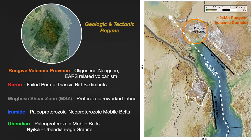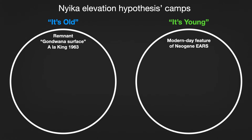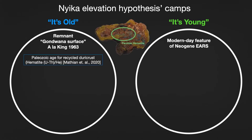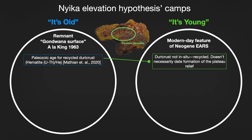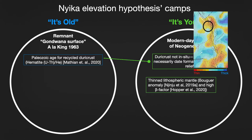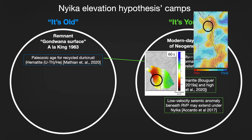So the question arises about Nyika: given its proximity to the Malawi Rift and the volcanic province, could they be somehow related? And when did the plateau form? There are two main camps for the development of Nyika — that it's an old remnant original surface that dates back to Gondwana, or that it's a young feature directly related to recent rifting in Malawi. In the old camp, hematite dating of detrital material from Nyika was dated to the Permian; however, this was not an in situ sample and does not date the formation of Nyika's relief itself. In the young camp, thin lithospheric mantle and low-velocity seismic anomalies beneath the volcanics in the north do seem to persist under Nyika, giving rise to the idea that Nyika could be plume-supported as well.